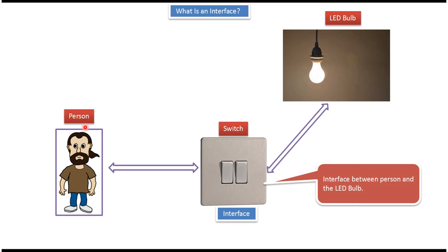Here you can see the person and here you can see the LED bulb. Suppose a person wants to switch on the LED bulb or switch off the LED bulb, then he has to use the switch. Here, switch is the interface between the person and the LED bulb.